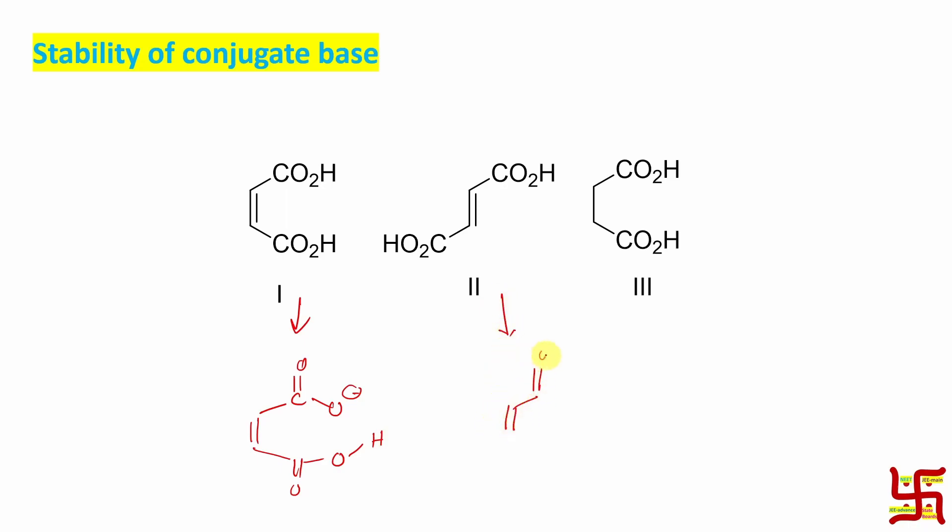Here conjugate base looks like this. Now remember student, conjugate base is nothing but an electron rich molecule. Anionic means excess electron density. So its stability is actually determined if there is any electron withdrawing group attached to it or not. So that is a very interesting point to be noted.